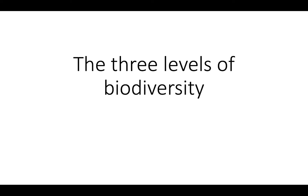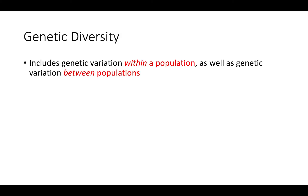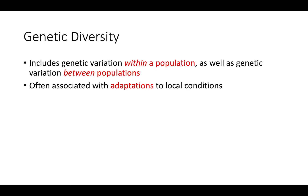This video is going to be about the three levels of biodiversity. The first level is genetic diversity, which includes genetic variation both within a population as well as the variation between populations. This is often associated with a population's ability to adapt to their local conditions.